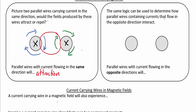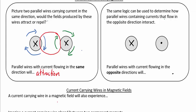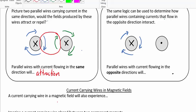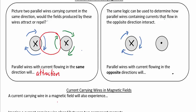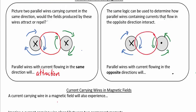Now similarly, if we have one current-carrying wire going into the page and one coming out of the page, we can determine that the field surrounding the first one is going to be clockwise, and the field surrounding the second one is going to be counterclockwise because it's coming out of the page. When we look at those two fields in the region where they interact, we see that they're in the same direction — and so wires carrying current in opposite directions will repel.